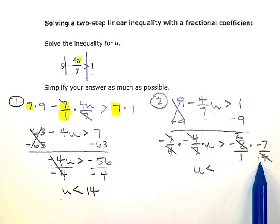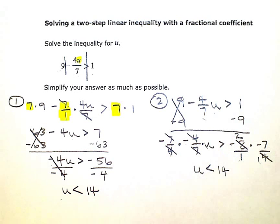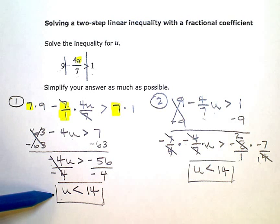In the numerator, I have negative two times negative seven, which is positive fourteen. Whichever way you prefer to solve it or deal with that fraction, you get u is less than fourteen as your solution.